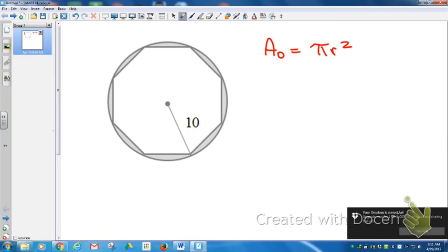This problem gives us the radius, and it says the radius is 10. So we're going to plug 10 in for r. We're going to get 10 squared pi, which equals 100 pi.